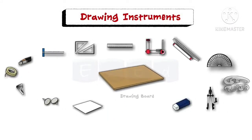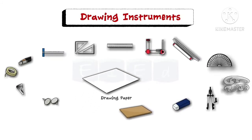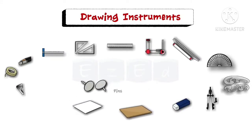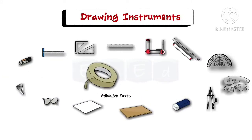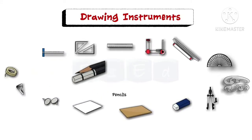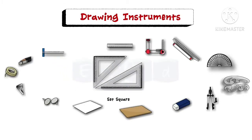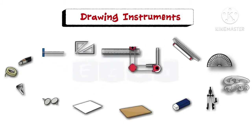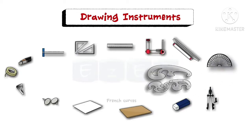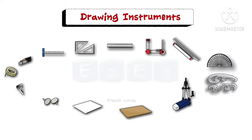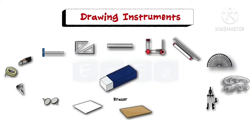In this we have: a drawing board, drawing paper, pins, clips or adhesive tapes, pencils, T-square, set square, scale, drafter, roller scale, protractor, French curves, compass and eraser.